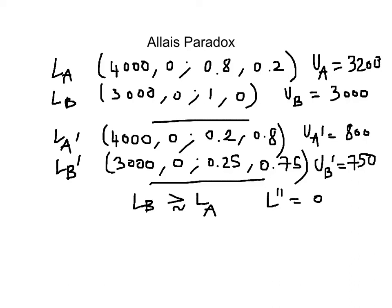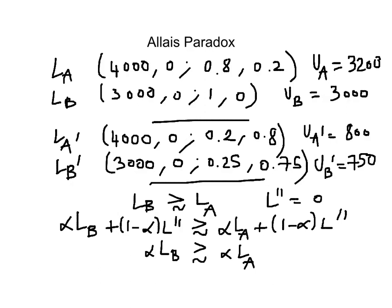So let's apply the independence axiom. The independence axiom says that alpha, a combination of Lottery B and Lottery L'', should be preferred to a combination of Lottery A and L''. And since L'' is simply equal to 0, I'm going to drop it. So I should have this result.